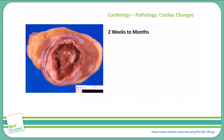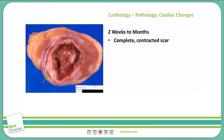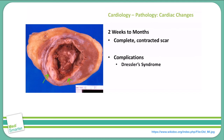Finally, two weeks to several months later, we see the complete contracted scar forming, where there is no more myocardium and just fibrous tissue that has replaced it — you can see that here in this photo. Complications during this time include Dressler's syndrome: a persistent low-grade fever, along with pleuritic chest pain, pericarditis — which we will see as a pericardial friction rub — and you may or may not see a pericardial effusion as well.